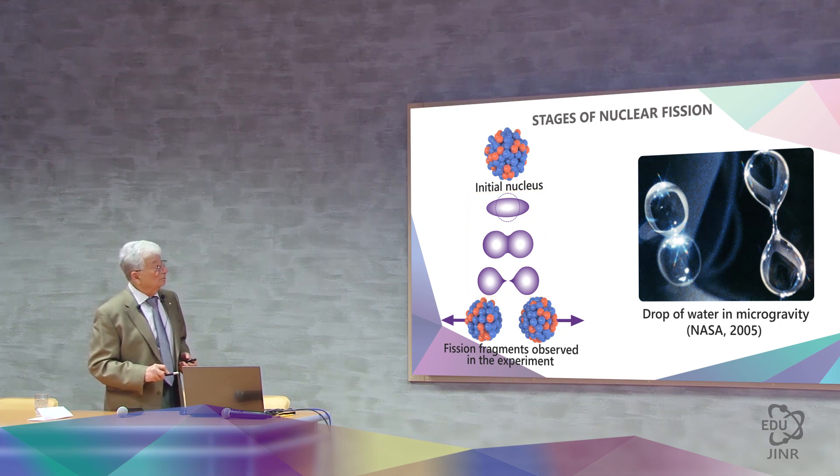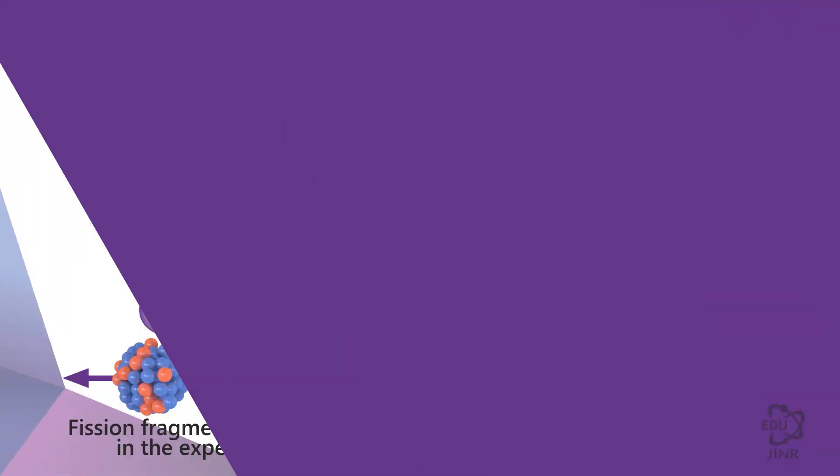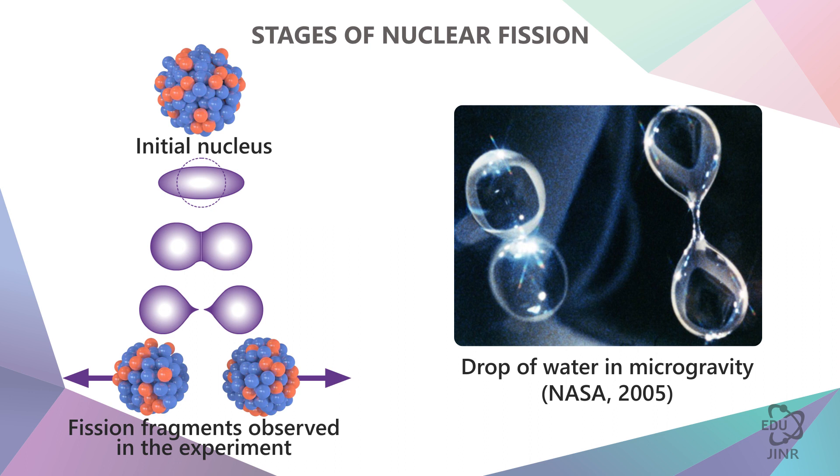NASA conducted an experiment on a satellite to determine what division looks like for a drop, where the force that counteracts the drop's compression is not a charge force, but gravity. You probably remember the first satellites when the astronauts drank water. They took a glass, poured out the glass, a large drop formed. Then they beat this drop with their hand. It split up into many small drops, and then they pushed these drops into their mouths.